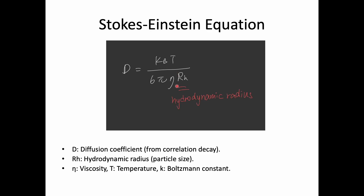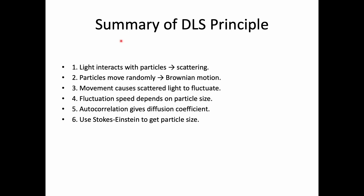Now we have derived the diffusion coefficient from the autocorrelation function. The next step is to use the Stokes-Einstein equation, which relates the diffusion coefficient to the hydrodynamic radius of the particle — that is, the size of the particle in solution. The other properties in this equation are the Boltzmann constant, the temperature, and the viscosity of the liquid the particles are in.